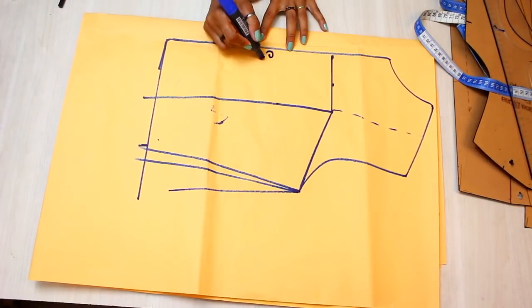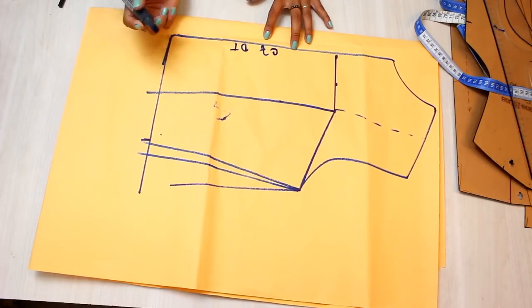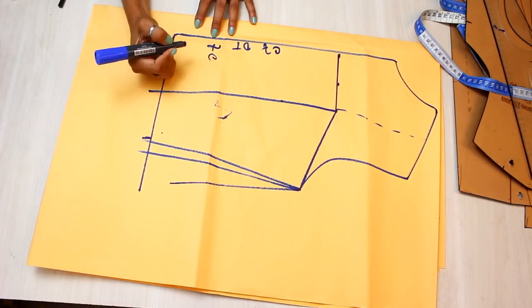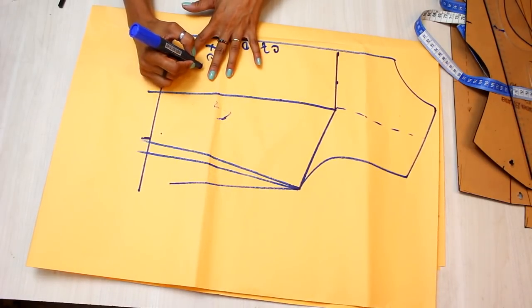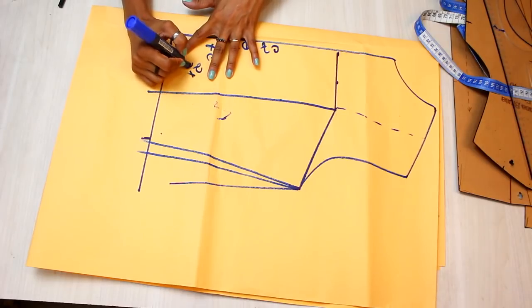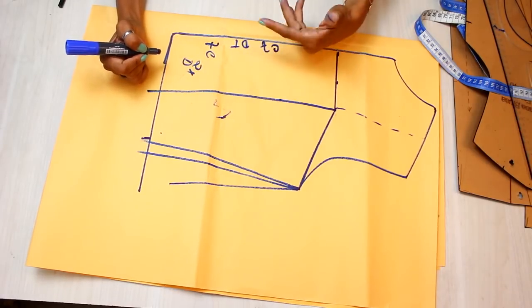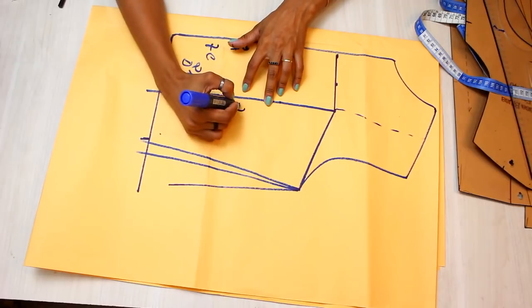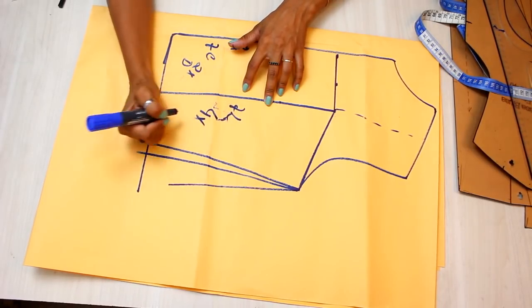So here I have center front, dobra of the fabric, central front. I'm going to cut this piece twice on the fold, because I want it all lined. Here I have front and lateral, I'm going to cut 4 times.